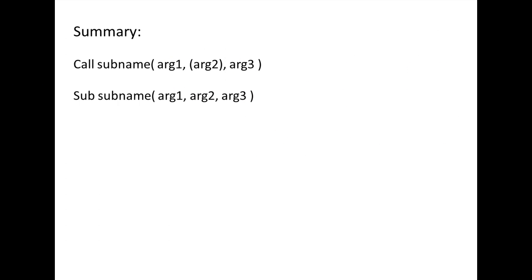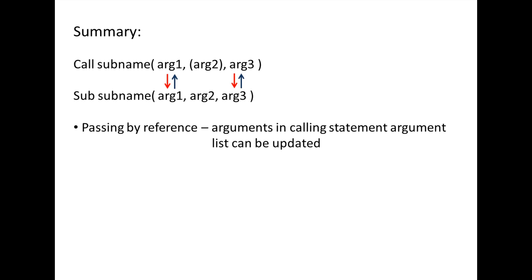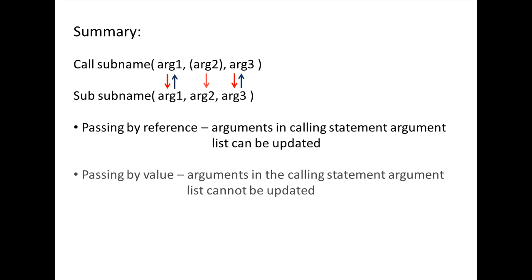In summary, if you do not place parentheses around an argument in the calling statement argument list, you are passing by reference. When you pass by reference, you allow the subprocedure to modify the argument. If you place parentheses around an argument in the calling statement argument list, you are passing by value. When you pass by value, you protect the argument from being modified when the subprocedure is terminated.